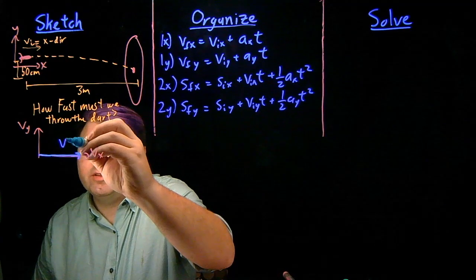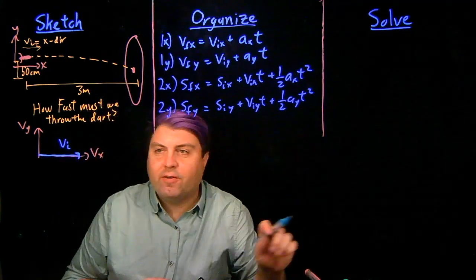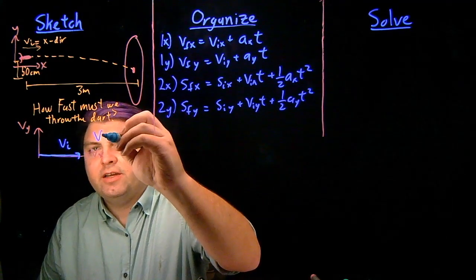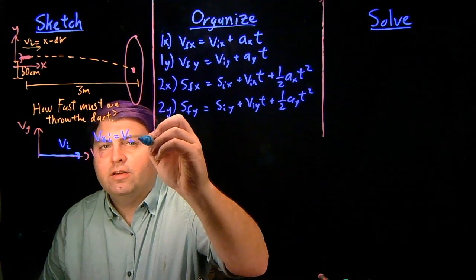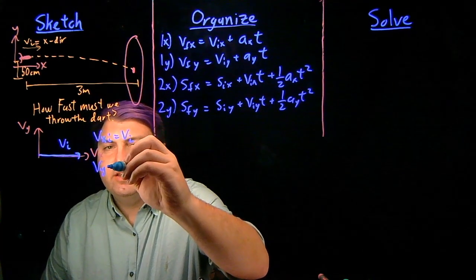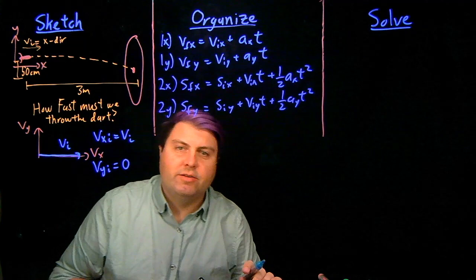So we can show that this is vi, and from this we can say that vxi is equal to vi, and that vyi is equal to zero.